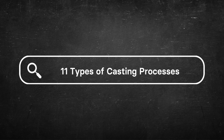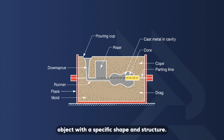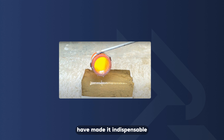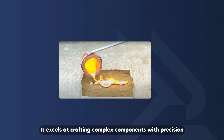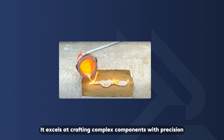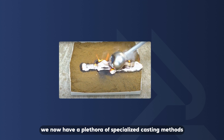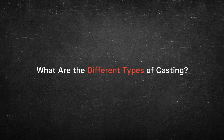11 Types of Casting Processes. What is casting? Casting is a fundamental manufacturing process where molten metal is poured into a mold to create a solid object with a specific shape and structure. Casting's versatility and cost-effectiveness have made it indispensable in industries like automotive, aerospace, and construction. It excels at crafting complex components with precision. With advancements in technology, we now have a plethora of specialized casting methods. Let's explore each one of these 11 casting processes.